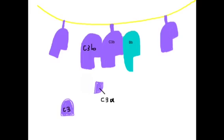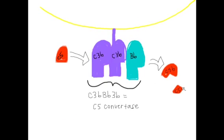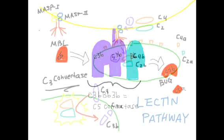Once C3 is cleaved by the C3 convertase, C3b can either attach to the cell surface or it can attach to the C3 convertase and create what is known as the C5 convertase. C5 convertase cleaves C5 into C5b and C5a, initiating the membrane attack complex.